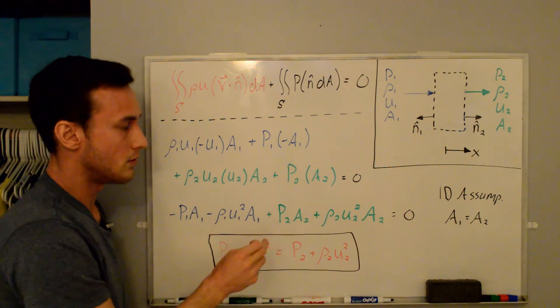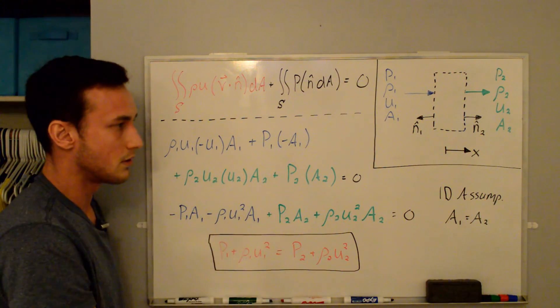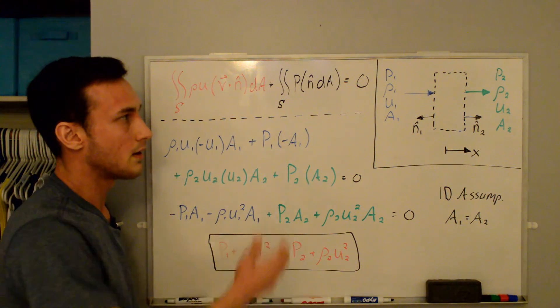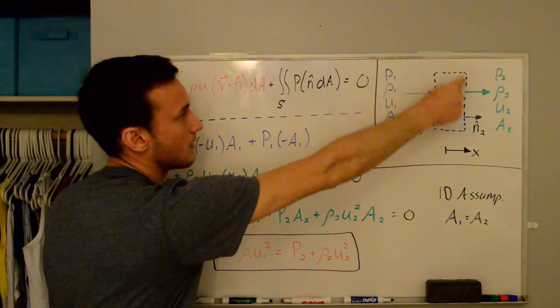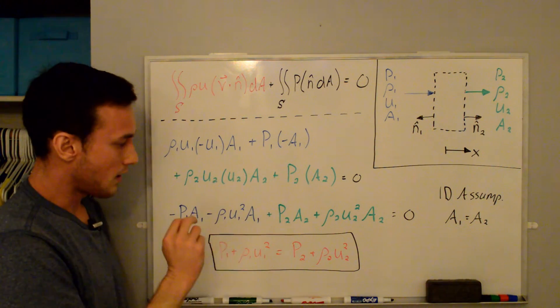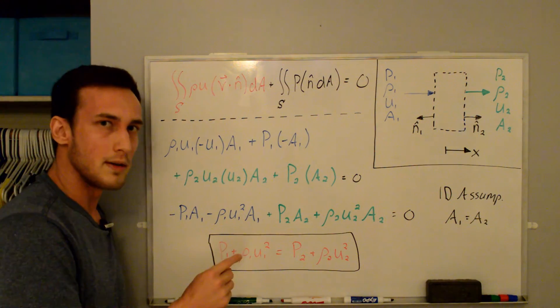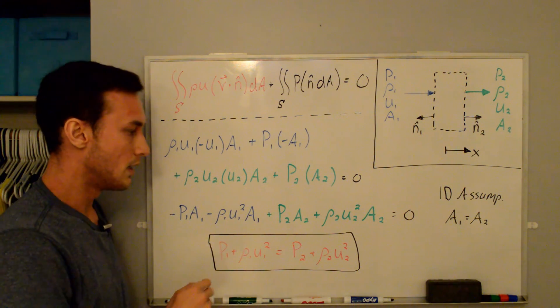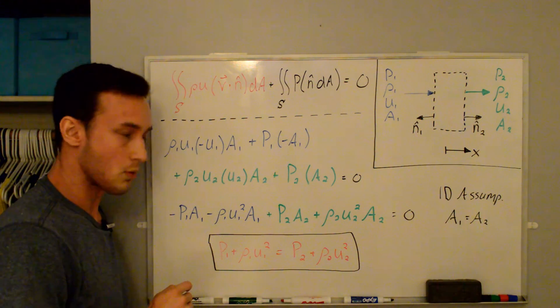So we're saying that we're deriving this for 1D, so we can assume that the area here is the same as the area here, a1 is equal to a2, and you'll note that they all cancel out then. And we get the final 1D conservation of momentum equation as p1 plus rho1u1 squared is equal to p2 plus rho2u2 squared. Thanks for watching.